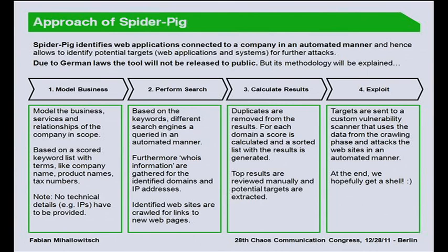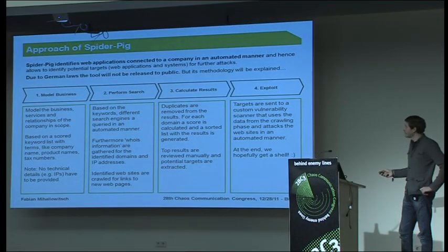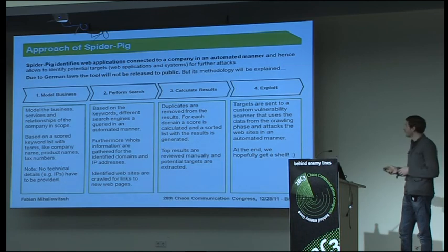SpiderPig tries to identify web applications in an automated manner on a business level, on just a keyword level. We structured it in four steps: first you model the business, then you perform search queries, you calculate and rank results, and at the end you exploit them.